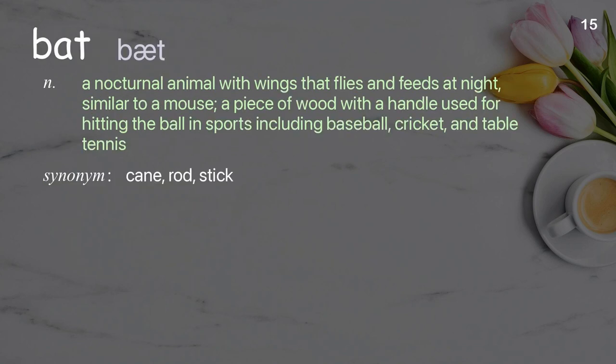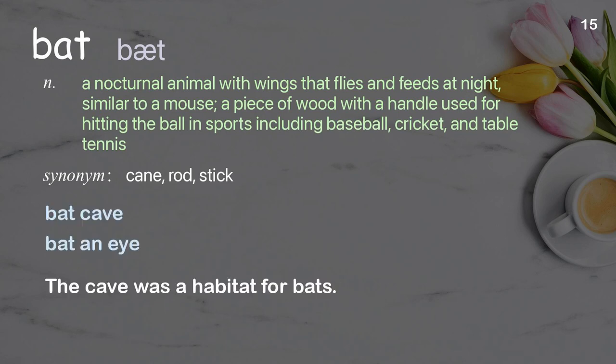Bat: a nocturnal animal with wings that flies and feeds at night, similar to a mouse; also a piece of wood with a handle used for hitting the ball in sports including baseball, cricket, and table tennis. Examples: Bat cave. Bat an eye. The cave was a habitat for bats.